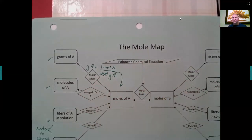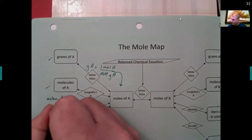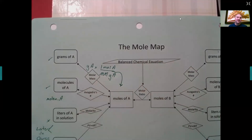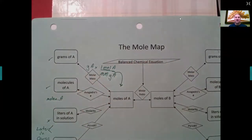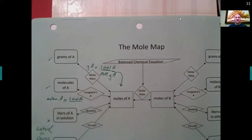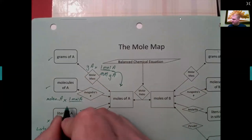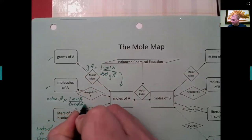If you have molecules, atoms, ions, or anything like that, remember you cannot abbreviate 'molecules' as M-O-L-E because that is 'mole,' and you cannot abbreviate it as M-O-L either, since that is already the abbreviation for mole. To convert molecules of A to moles, multiply by one mole of A over Avogadro's number of molecules.